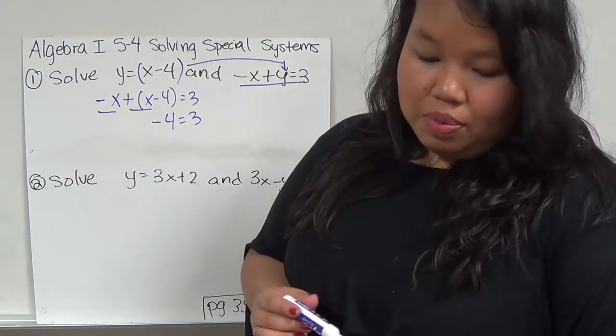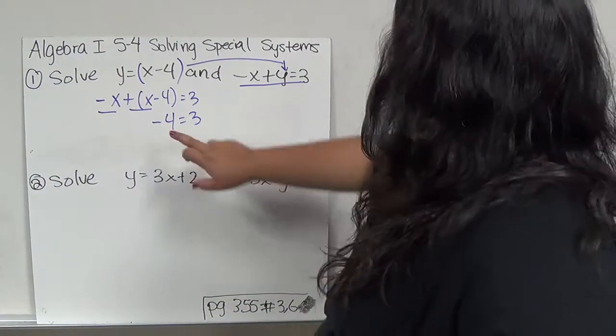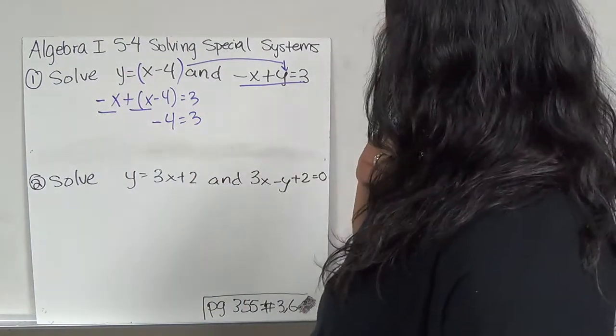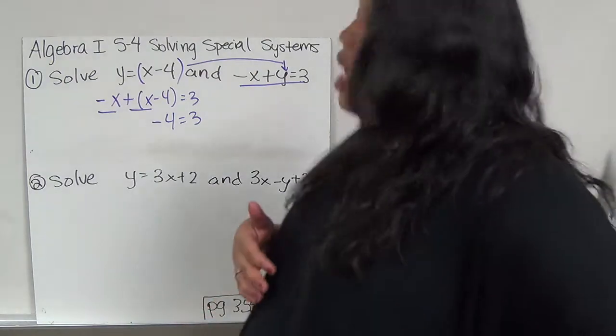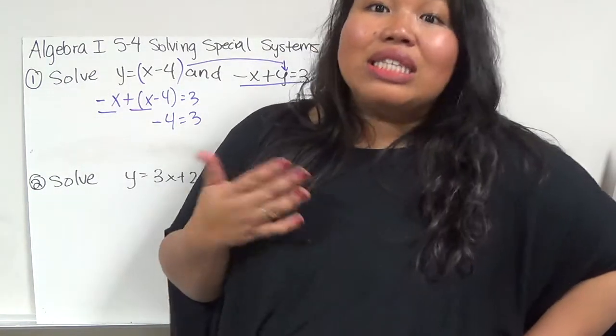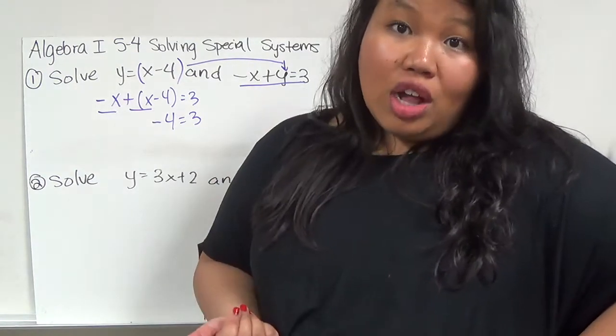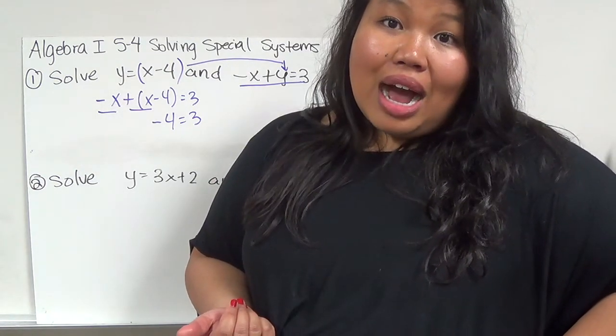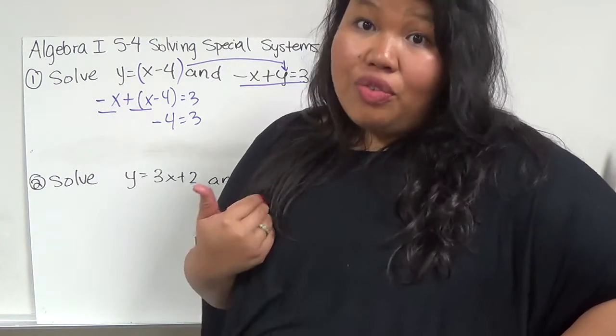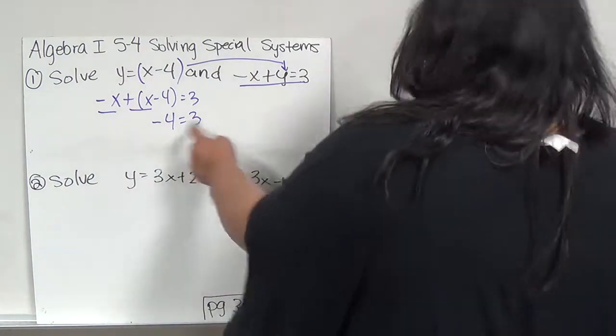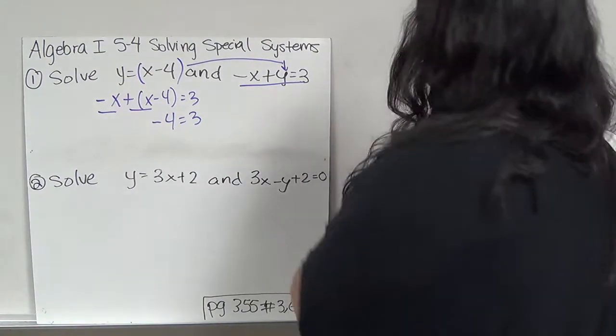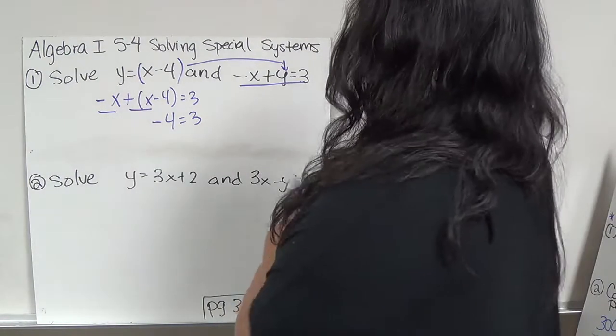I've gotten rid of the variables, and I have negative 4 equals 3. When does negative 4 equal 3? When in the world, when is a time where if you owe me $4, I'm going to give you 3 instead? It doesn't work that way. Because this will never happen, this will be no solution.